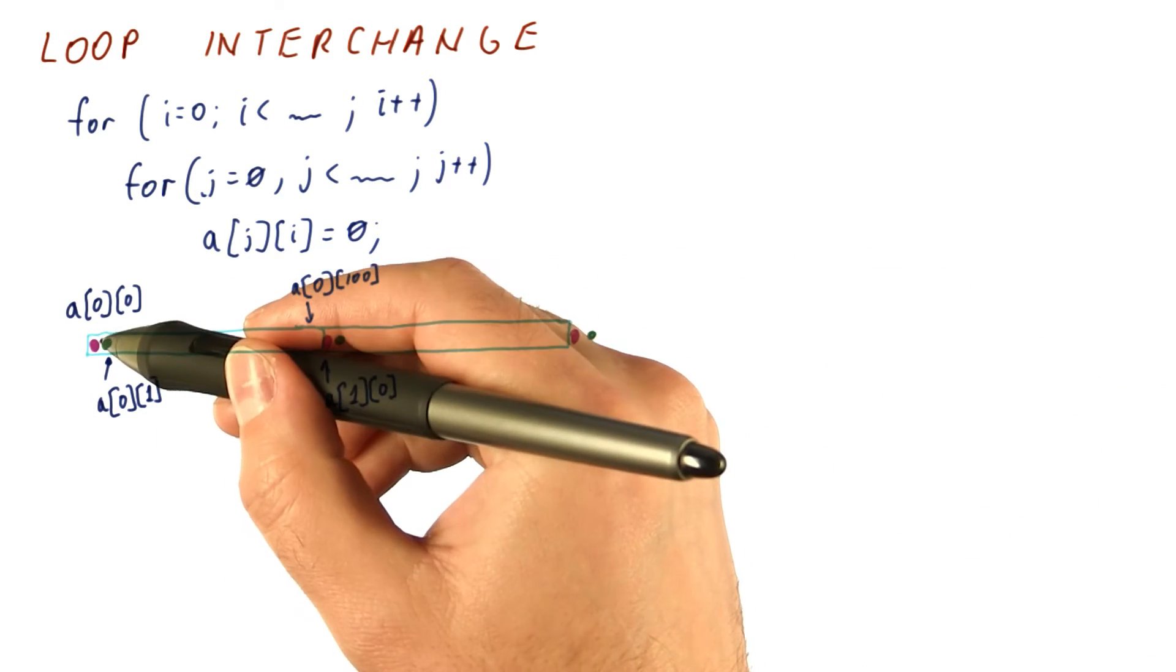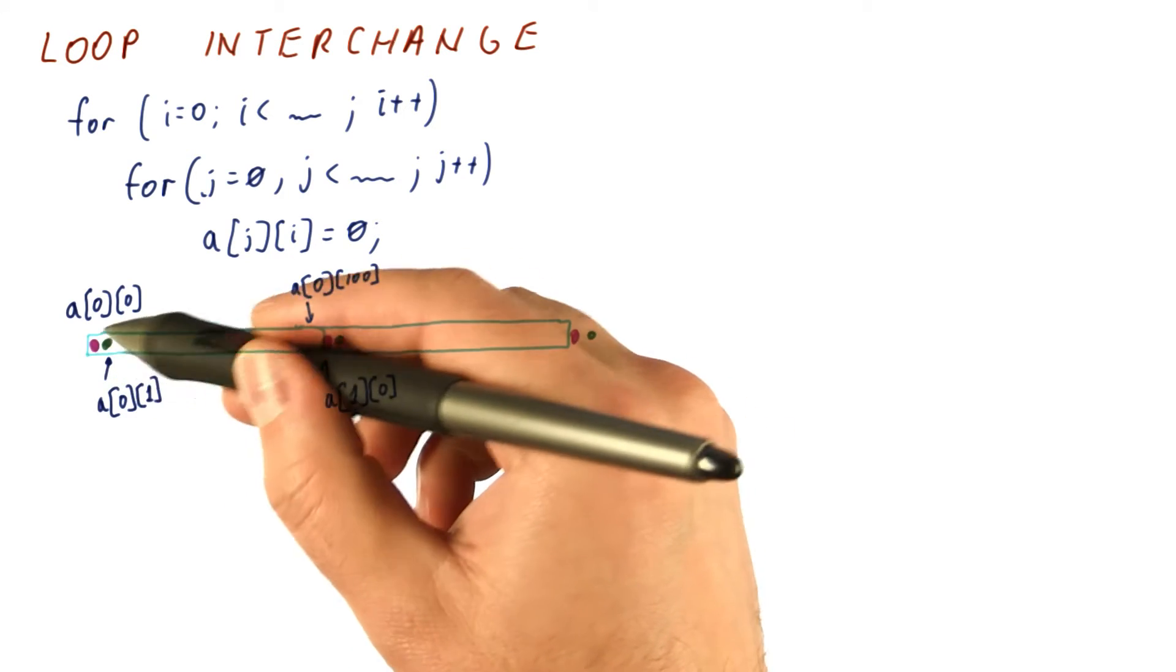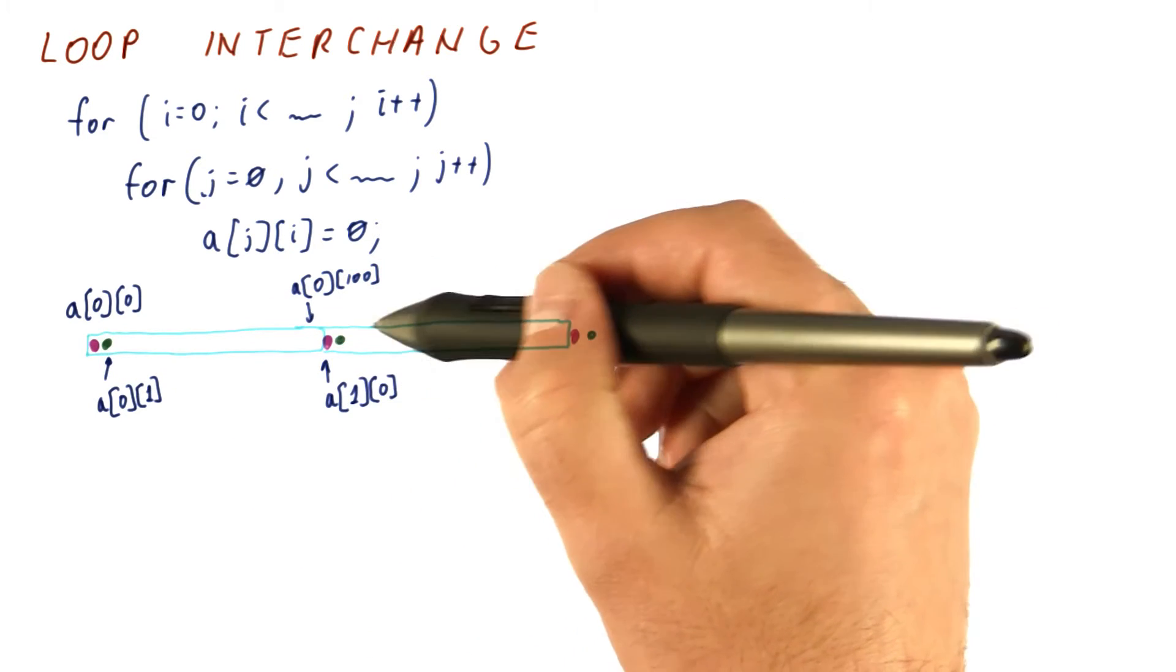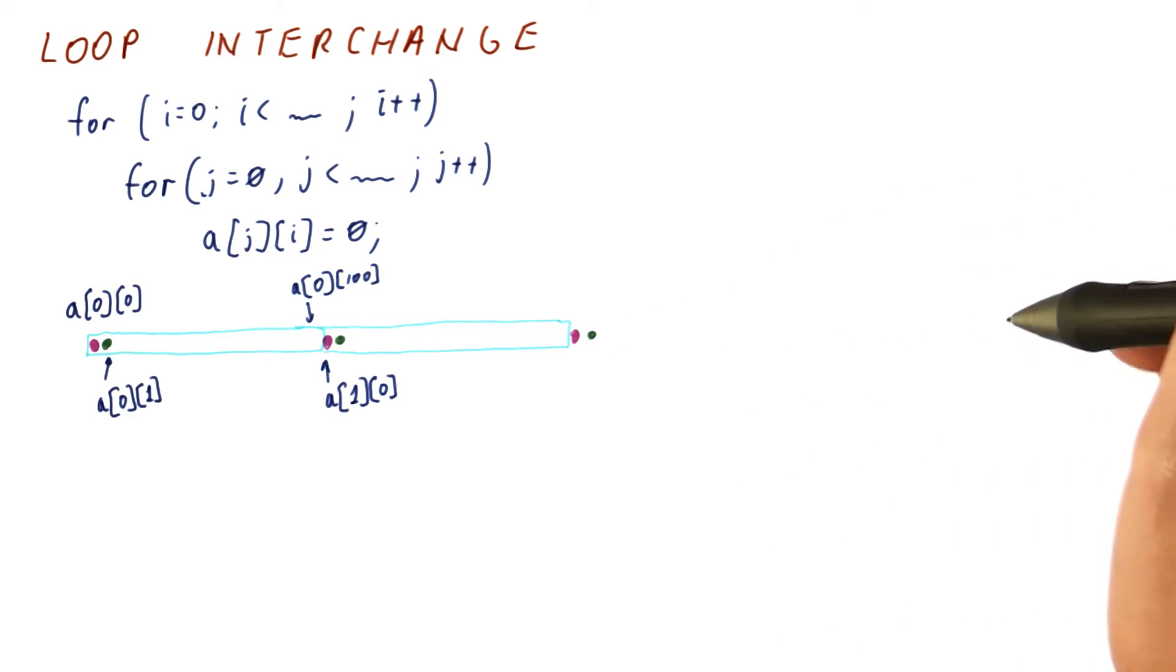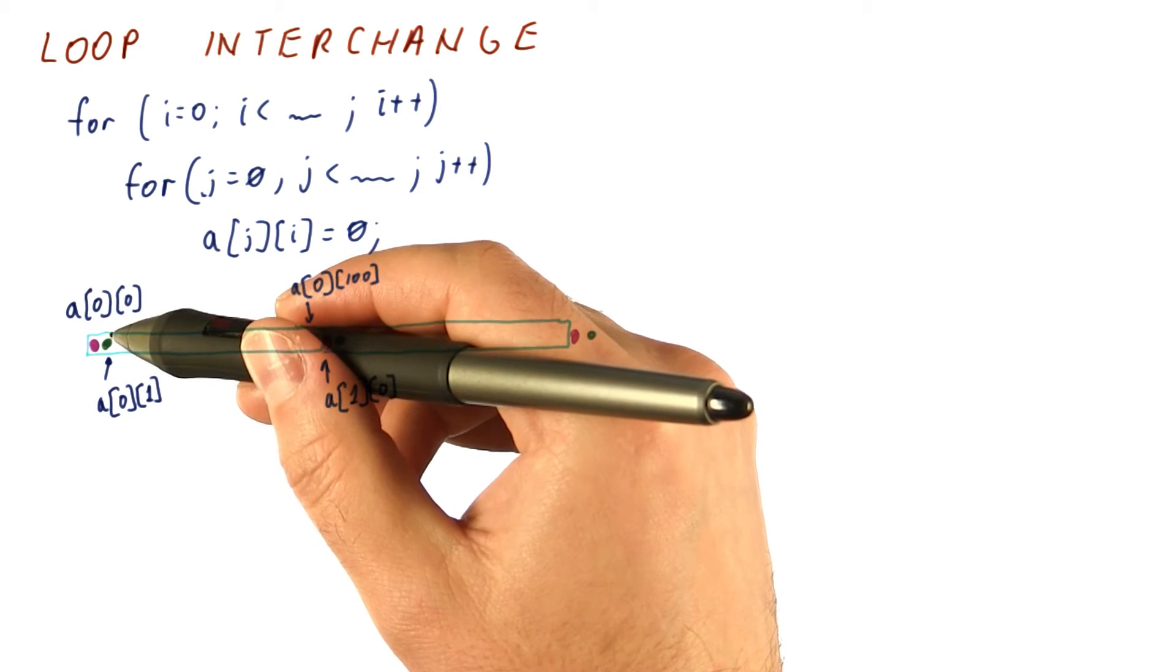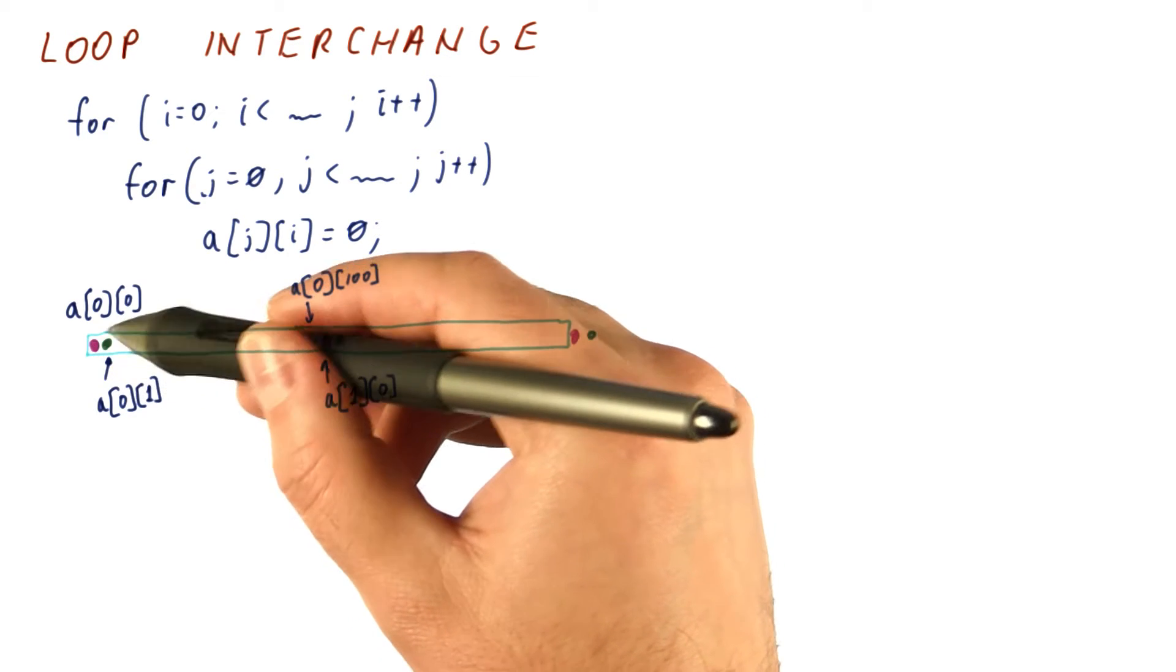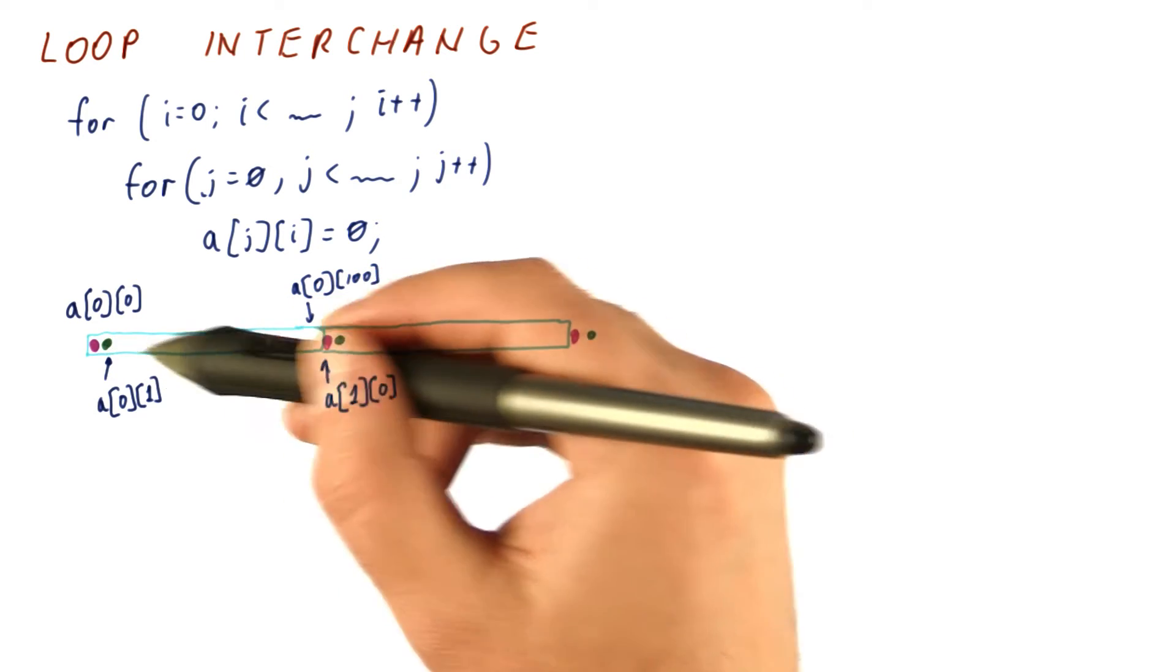So the problem is, when this is accessed, we fetch an entire cache block worth of stuff into the cache just to use this one element. Then we're going to fetch a block here to use this one element. And by the time we reach the end of the matrix and loop back here, we might have run out of space in the cache. The block that we would now use has been kicked out of the cache, so we fetch it again, use this one element, and so on.